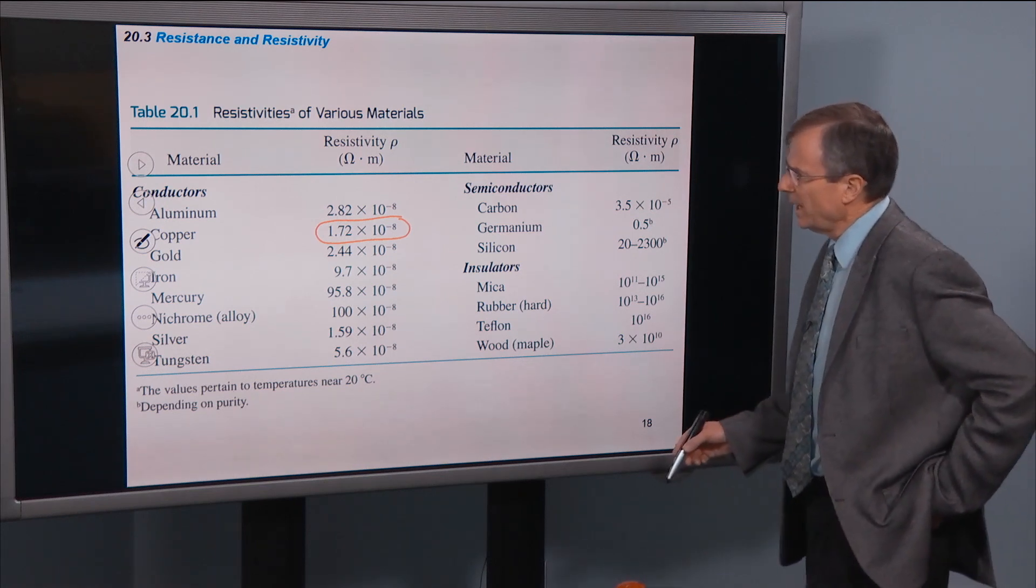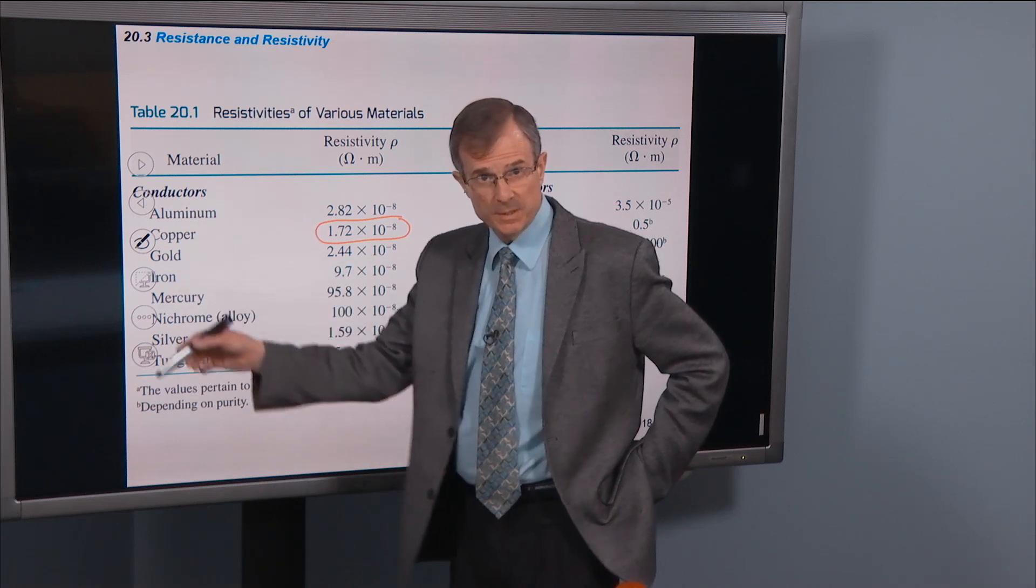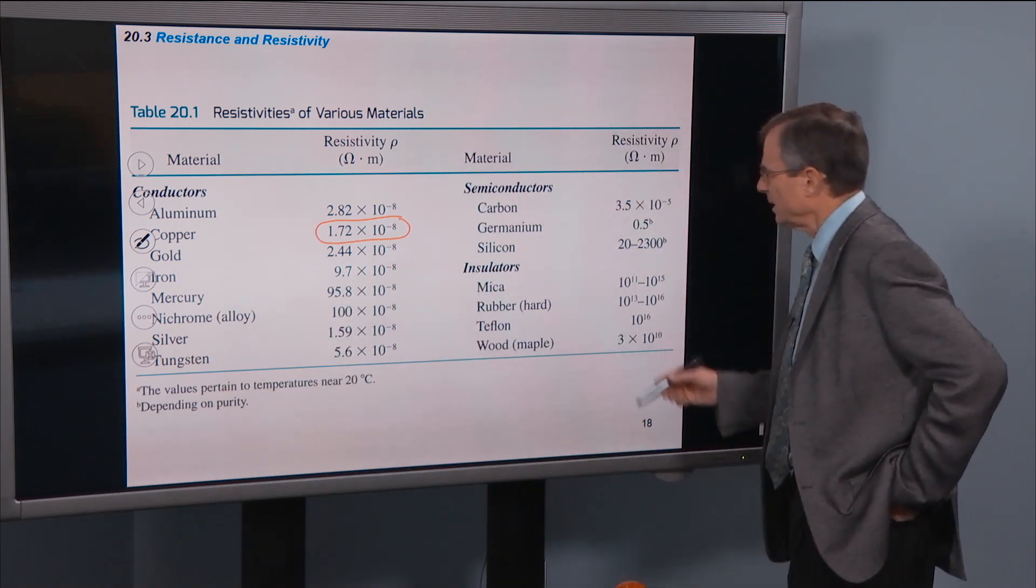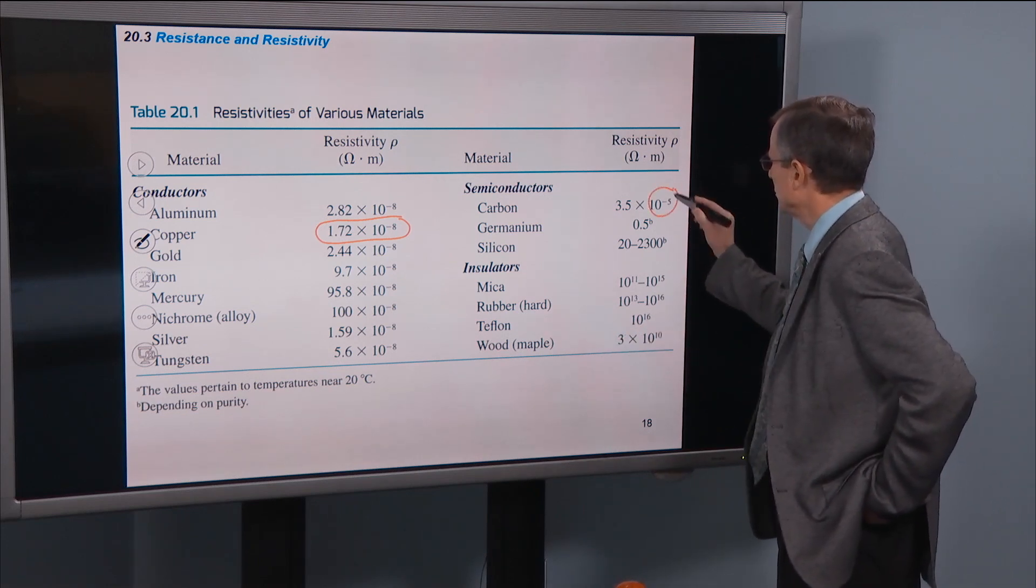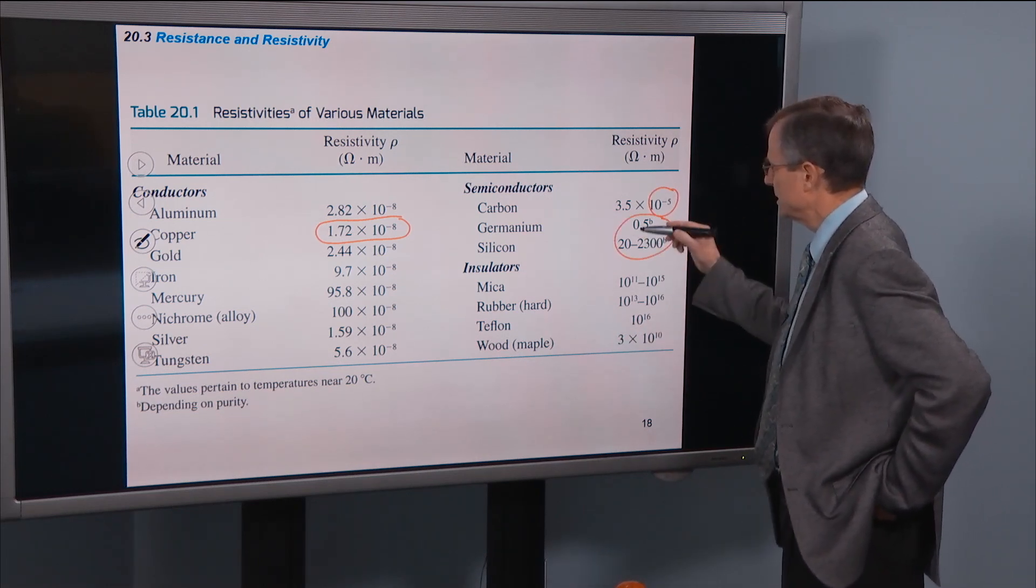We also have, these are conductors, so they have very low resistivities. Semiconductors, carbon, germanium, and silicon, have much larger resistivities.